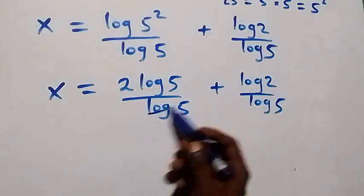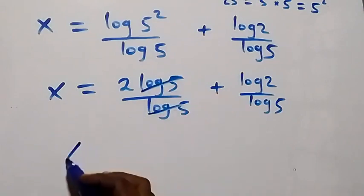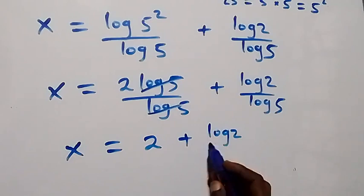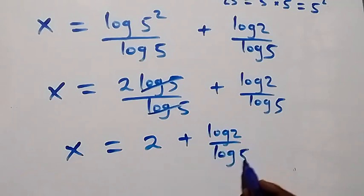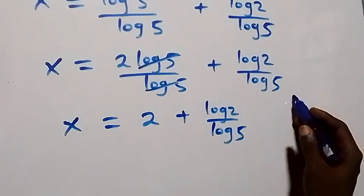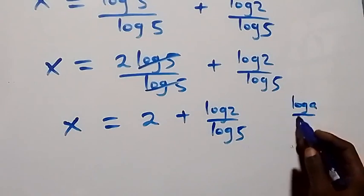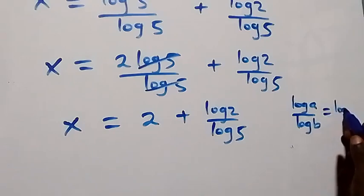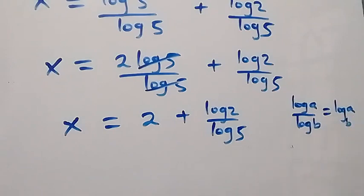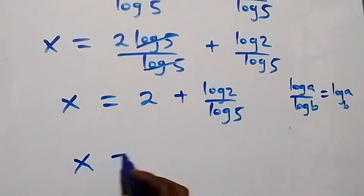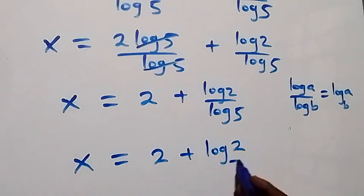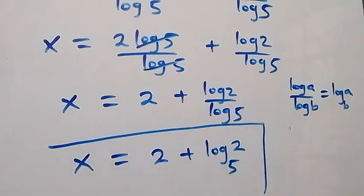Log 5 squared over log 5 simplifies: the 2 comes down and log 5 cancels, leaving us with 2. So we have x equals to 2 plus log 2 over log 5. Using the change of base rule, where log a over log b is the same as log a to base b, we can write this as x equals to 2 plus log 2 to base 5.